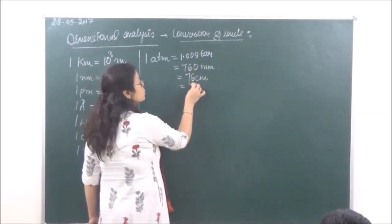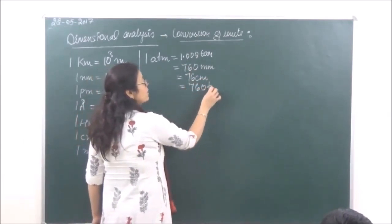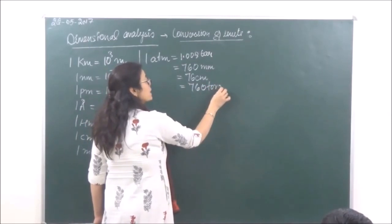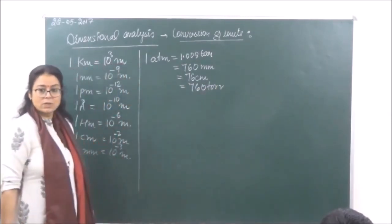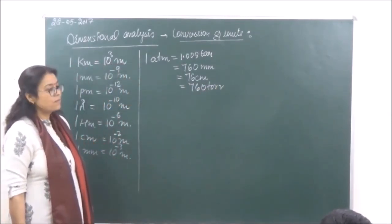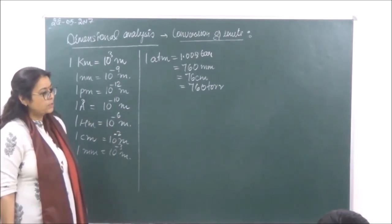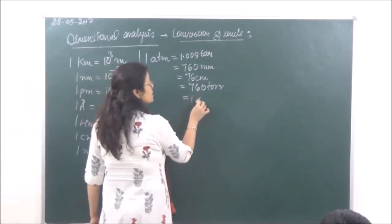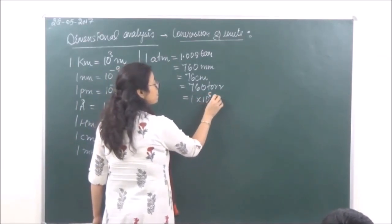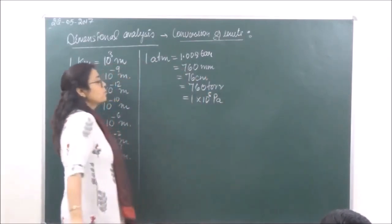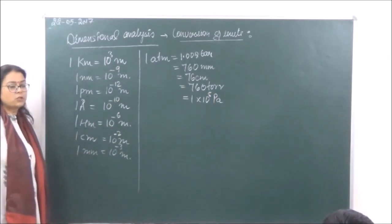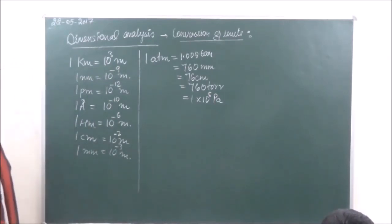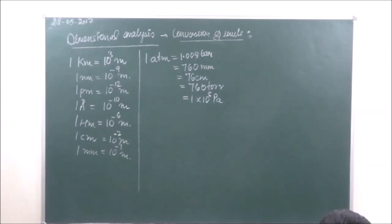One atmosphere is also equal to 760 cm of mercury, and it is equal to 760 torr. One atmosphere is also equal to 1 into 10 raised to power 5 pascals. So these conversion factors are important to know.